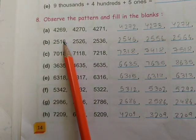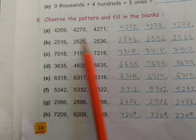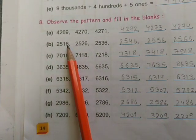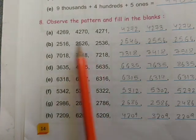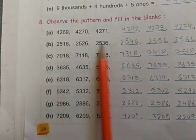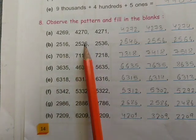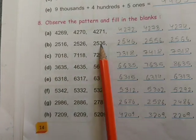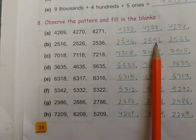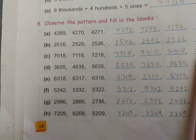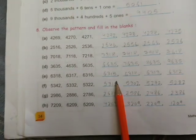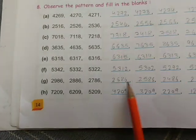Similarly the next pattern: here is 2516. We need to find which order it is increasing. There is a gap of 10. So 16, 26, 36 - and similarly then 46, 56, 66, 77. It is very easy - you can do it yourself.